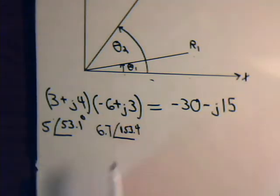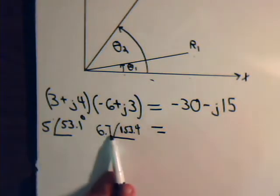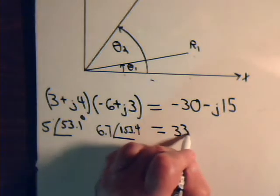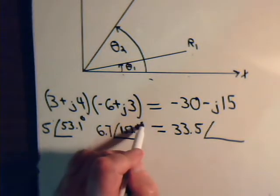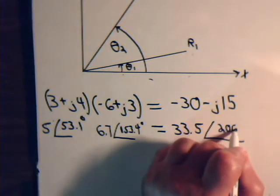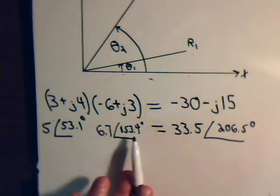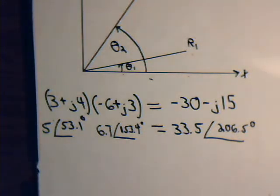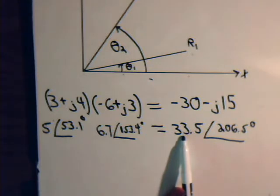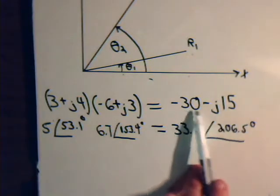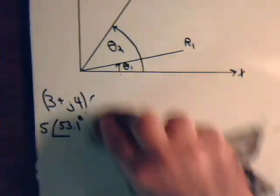So if we multiply these as polar vectors, it would simply be 5 times 6.7, that's 30 plus 3 and a half, that's 33.5. Add the angles together, we ended up with 206 and a half degrees. That's all we have to do, multiply this, add the angles, and then you've multiplied the two vectors together. If you want, you can look at this polar form, express it in terms of its rectangular components, and you should get this answer.